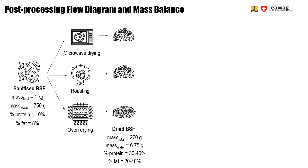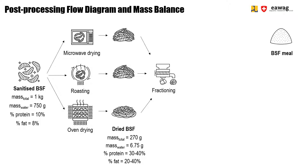The proteins inside the larvae get more concentrated to a percentage of 30 to 40. Then dried larvae can be further fractioned. This fractioning means that the dried larvae are split into two fractions: the protein fraction, the BSF meal, and the fat fraction, the BSF oil.